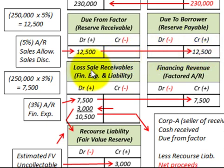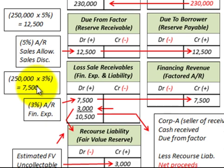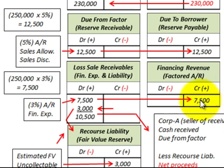Now we look at the loss on sales of receivables for Corporation A. The financing expense is based on 3% of the accounts receivable: $250,000 times 3% equals $7,500. Corporation A debits the loss on sales of receivables for $7,500, and Bank B credits their financing revenue for $7,500.